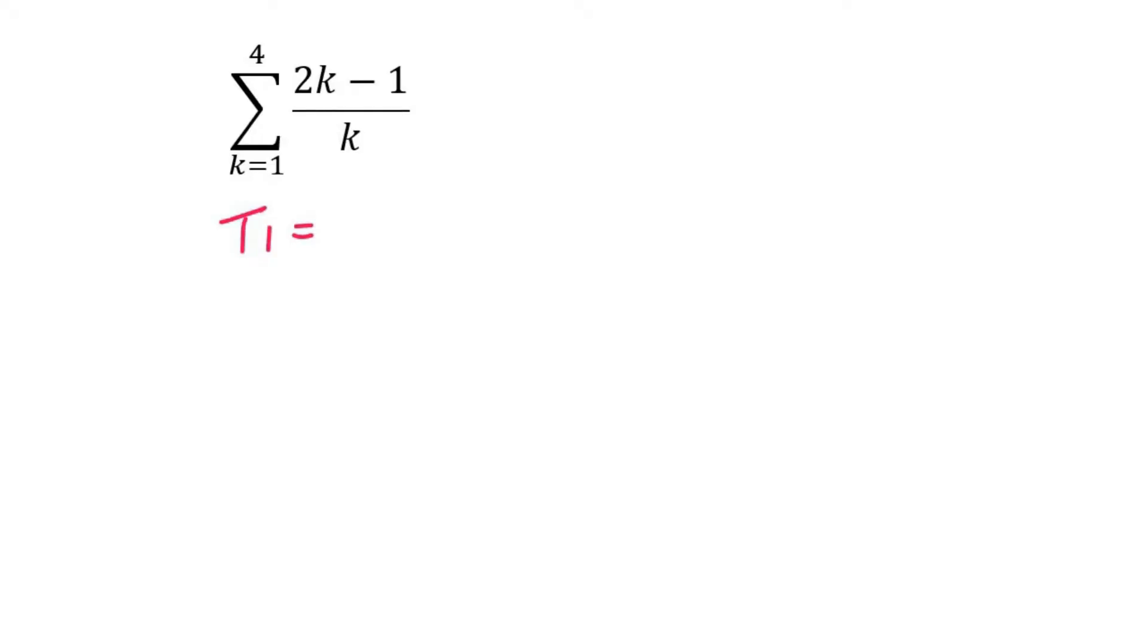Term 1, we start by plugging whatever this number is into the place of k. So that'll be 2 times 1 minus 1 over 1, and that actually just gives us 1. Term 2 is going to be 2 times 2 minus 1 over 2, which is 3 over 2. And then lastly term 3, which will be 2 times 3 minus 1 over 3, and that gives us 5 thirds.